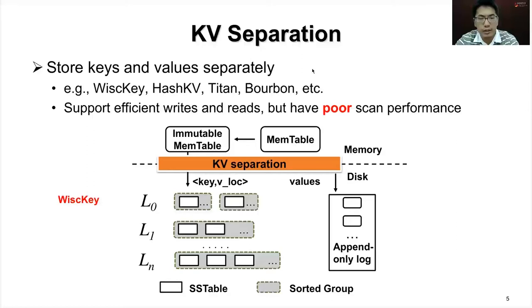It gives us another angle to think about the problem: should keys and values be stored together? Key-value separation was first proposed to deal with the write amplification problem on SSDs. It is widely adopted in subsequent work like WiscKey, Titan, and Bourbon. It can support efficient writes and reads but has poor scan performance due to the disorder of values.